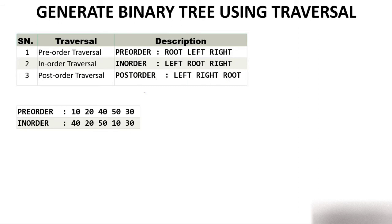The question is: given the pre-order and in-order, you have to create a tree. Always remember — if you are asked to create a tree, then one order which is mandatory is in-order. Either it will be in-order with pre-order, or in-order with post-order, but in-order will be mandatory in a binary tree. I am emphasizing: if you are given orders and asked to create a tree, in-order will be compulsory.